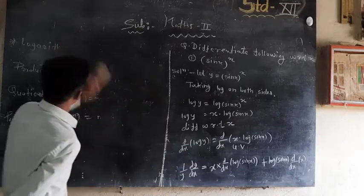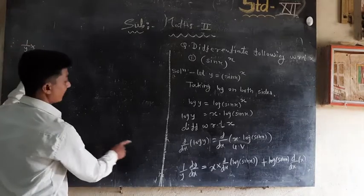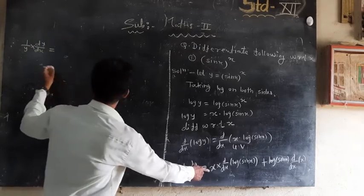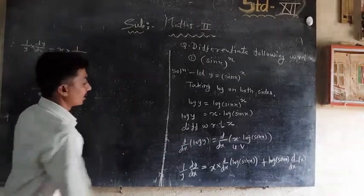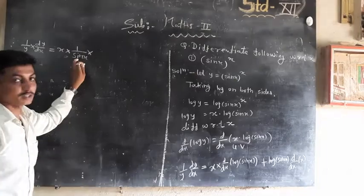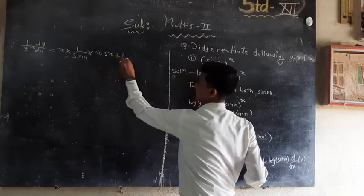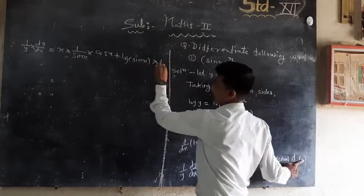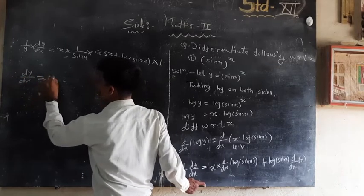So: (1/y) · dy/dx = x · (derivative of log(sin x)) + log(sin x) · (derivative of x). The derivative of log(sin x) = (1/sin x) · cos x. And the derivative of x is 1. Therefore, dy/dx = y · [x · (cos x / sin x) + log(sin x)].